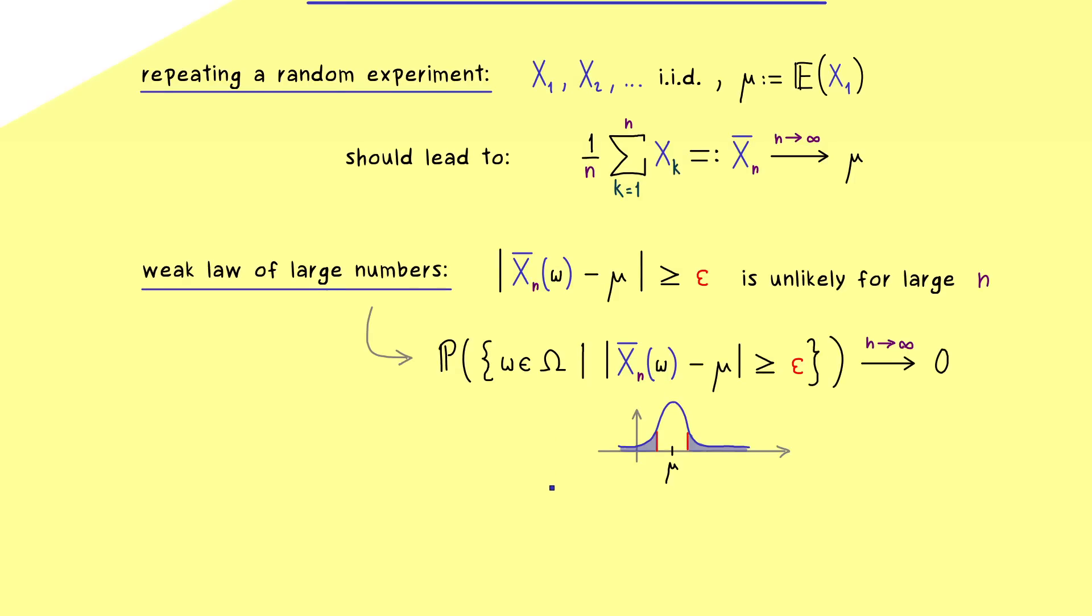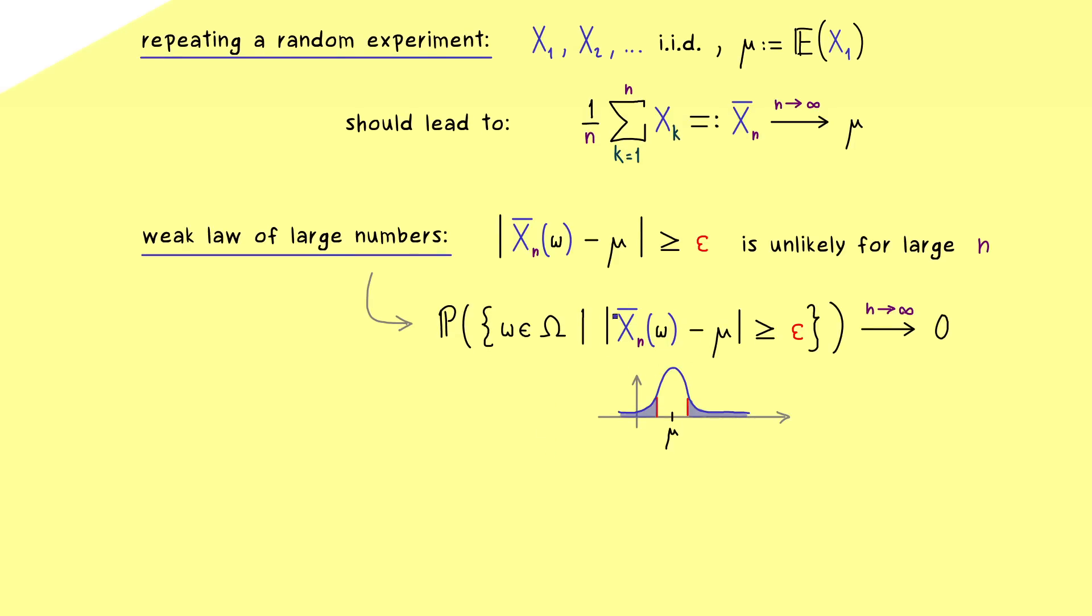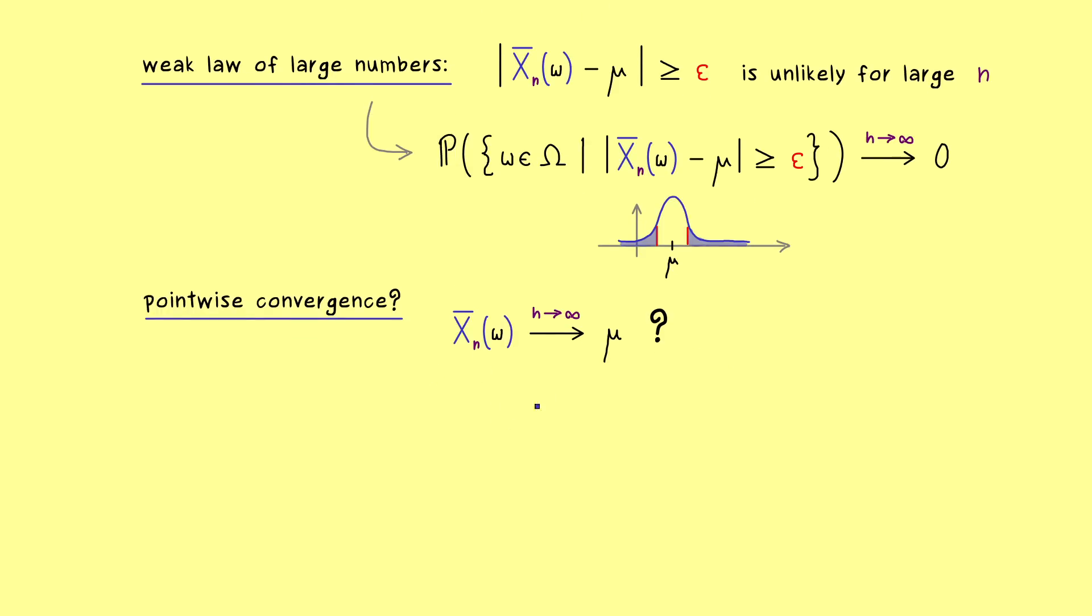So this is a nice statement, but it does not tell us anything about the pointwise convergence of the random variable here. However, this is definitely something we want to have if we think of a repeated random experiment. So more precisely, it would be nice if x overline n of omega converges to mu. And in the setting here you see, this is just an ordinary limit in the real numbers. However, now the problem is, the weak law of large numbers cannot tell us what happens at a given point here, because it can only say something about the whole collection of omegas in capital omega. Therefore, you could imagine that actually strange things could happen for this sequence when n increases.